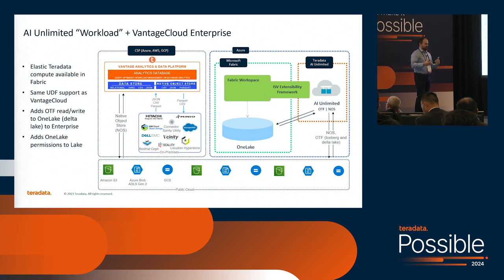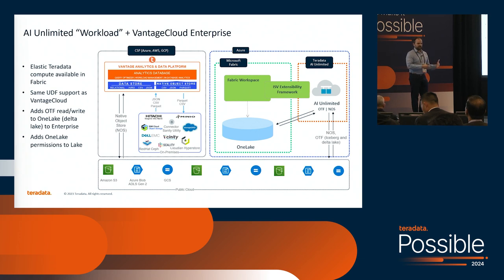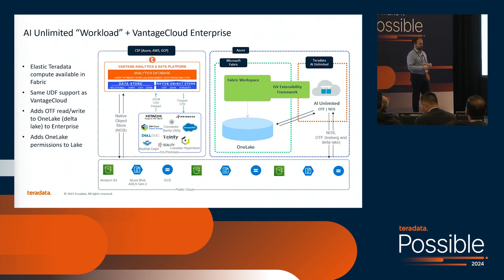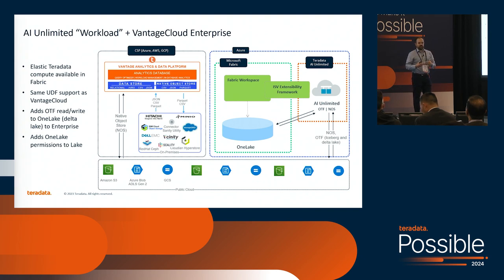I get asked a lot about what our integration is with Vantage Cloud Lake and Vantage Cloud Enterprise. The simple answer is that today, AI Unlimited is a standalone product. The point of integration is actually object store. There's also consistency between the engines — UDF support is even across the two, so if your team is using those in-database functions, that will be consistent. But they are two separate products today. AI Unlimited does add some capabilities not present in Lake and Enterprise. Enterprise does not have OTF. Lake does have OTF but has not yet integrated with OneLake. So if you're looking to use the Teradata engine in Fabric or on OneLake, AI Unlimited will do that for you.